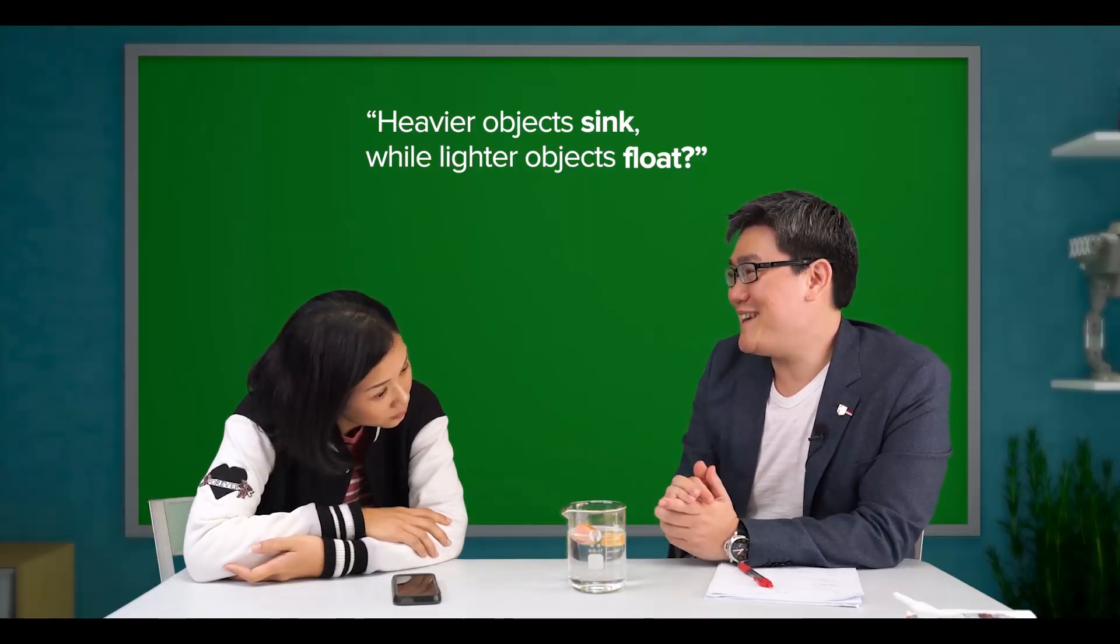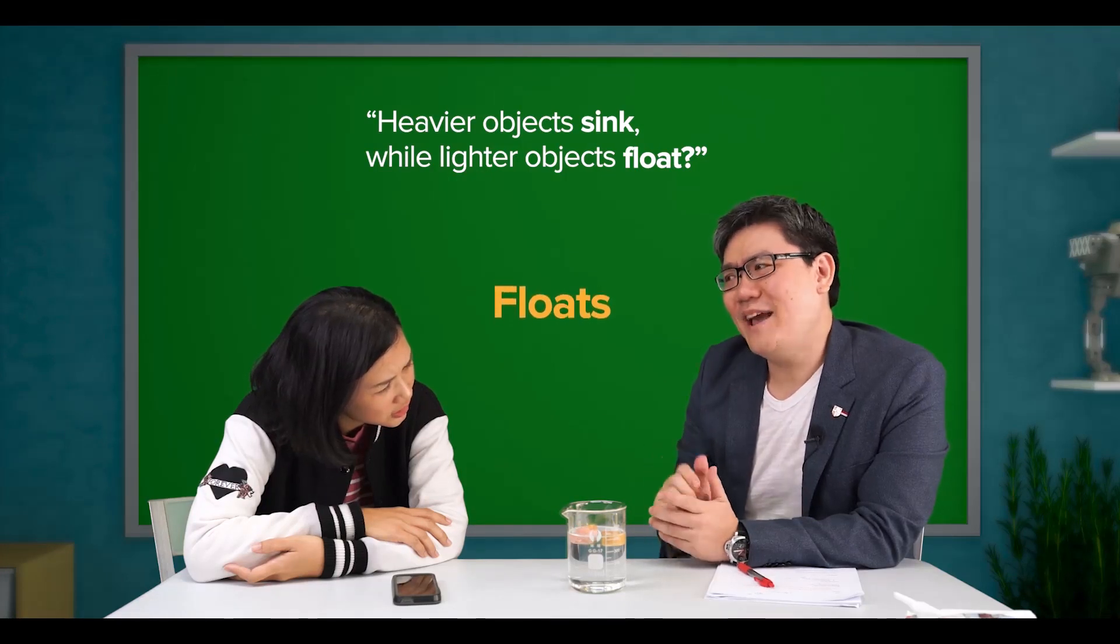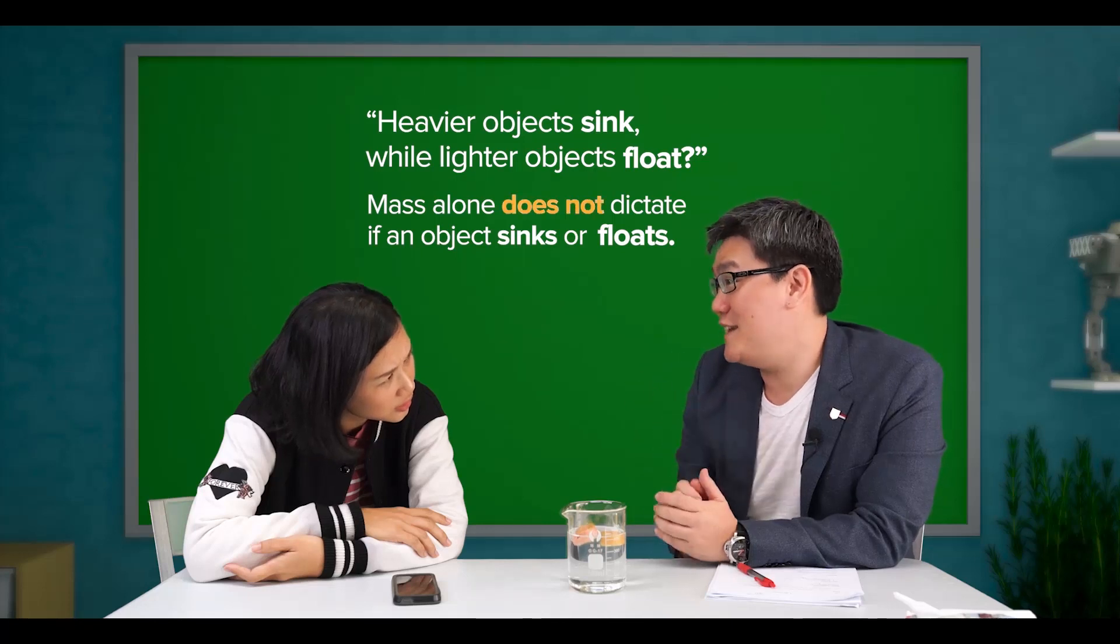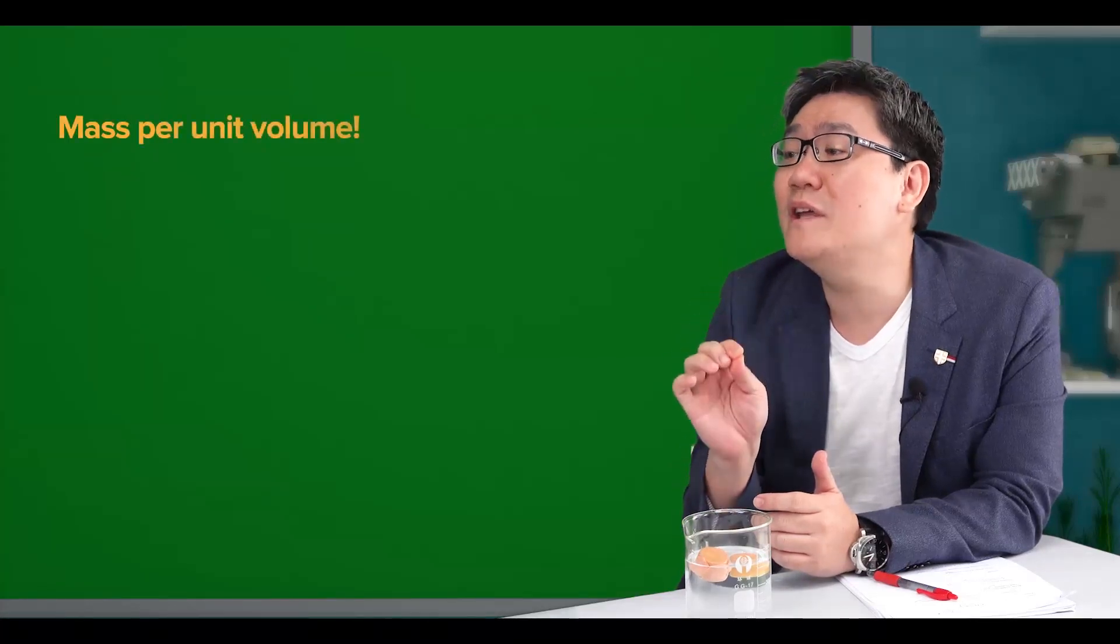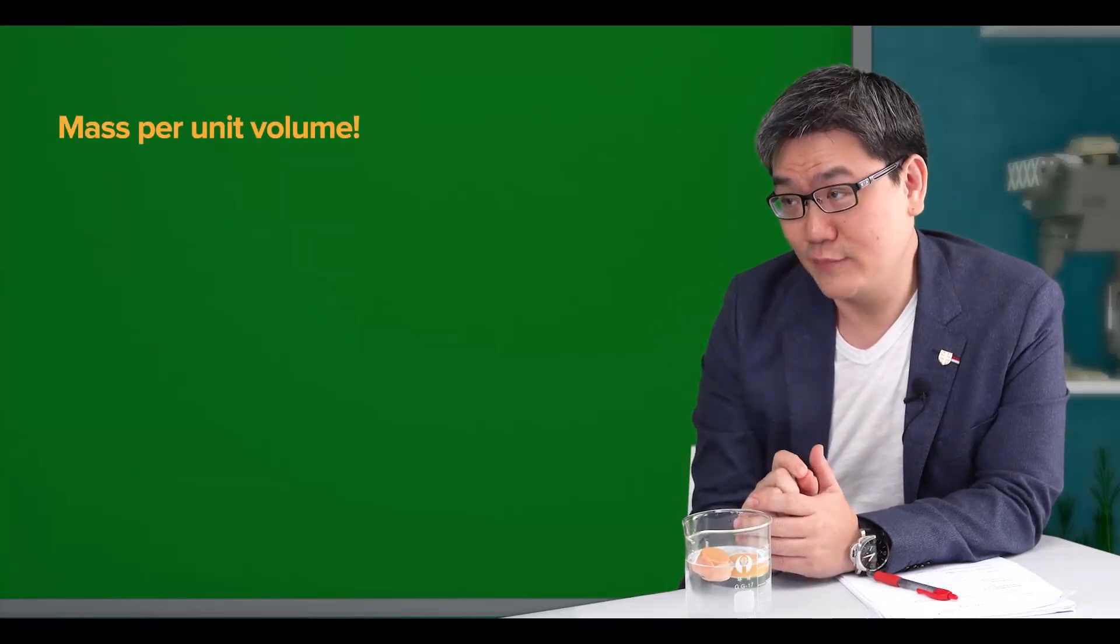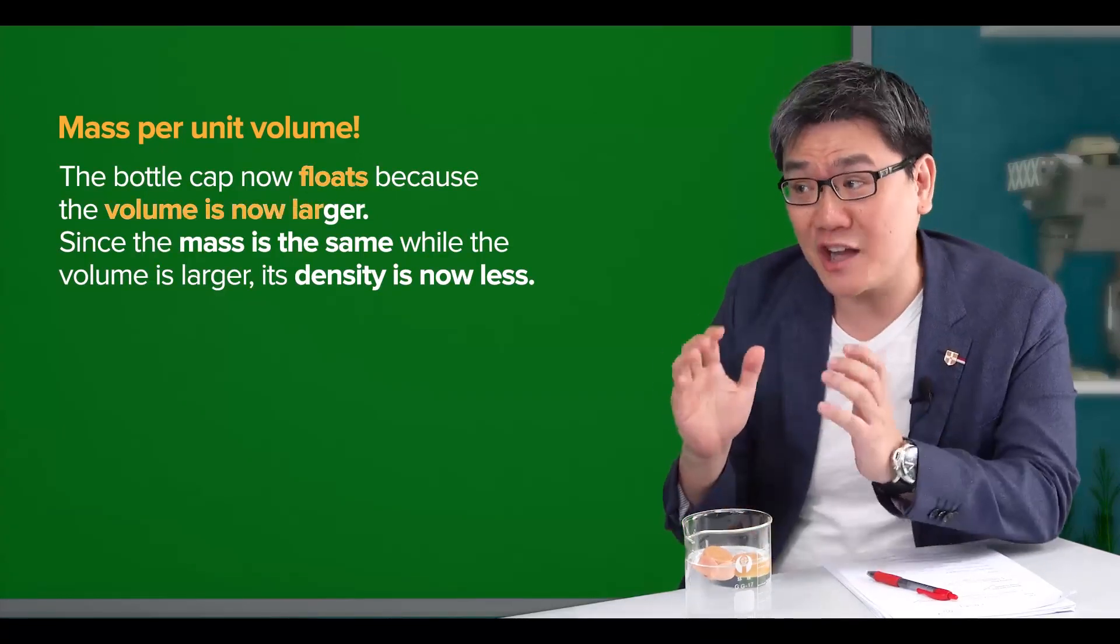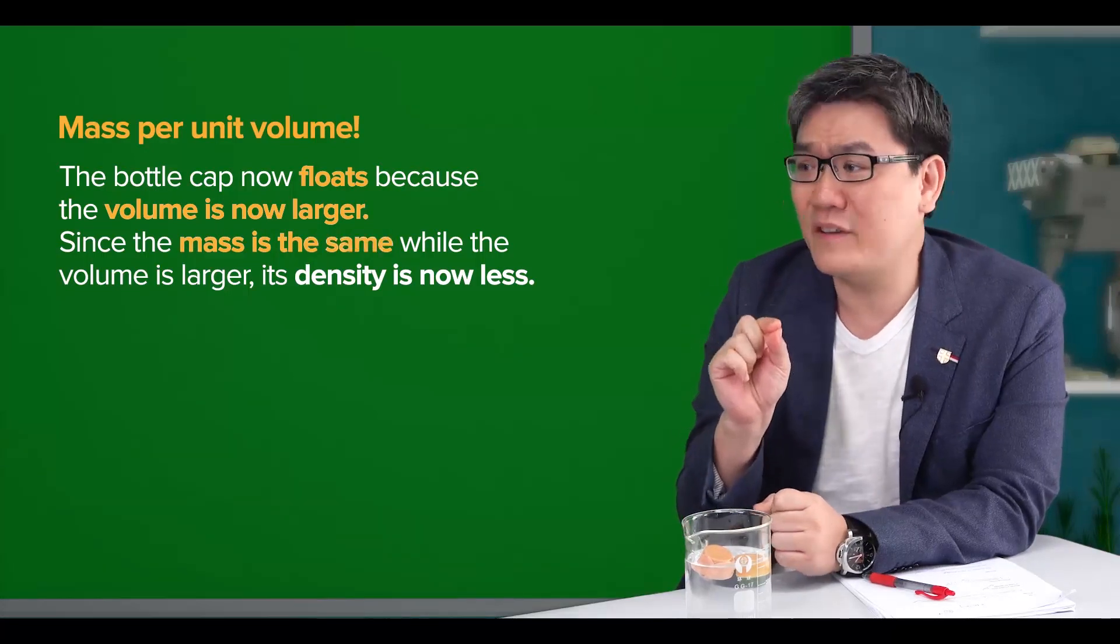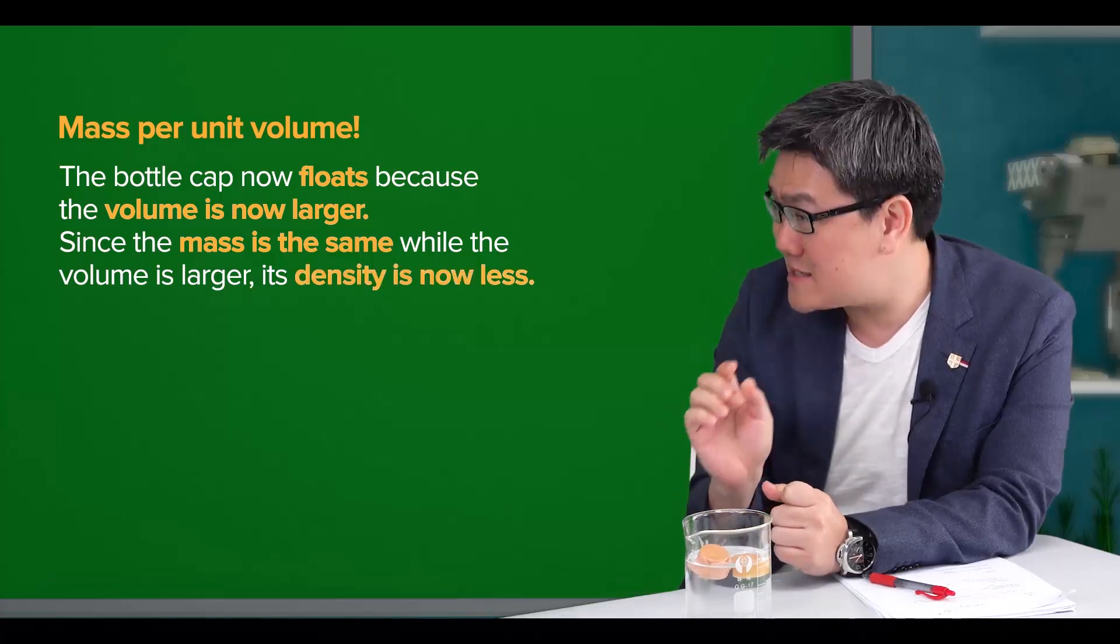As you can see, it floats. And so, mass alone does not dictate if an object sinks or floats. Rather, it is mass per unit volume. The bottle cap now floats because the volume is now larger. Since its mass is the same while the volume is larger, its density is now less.